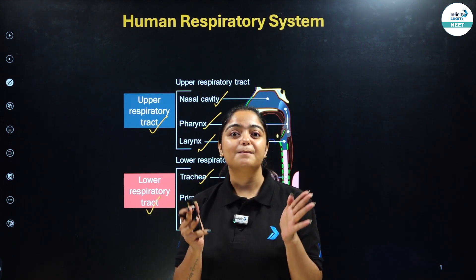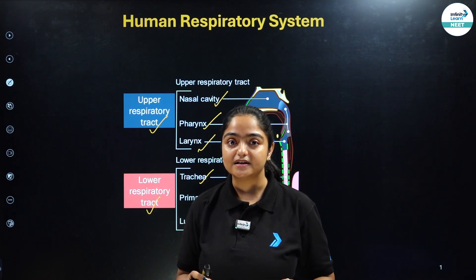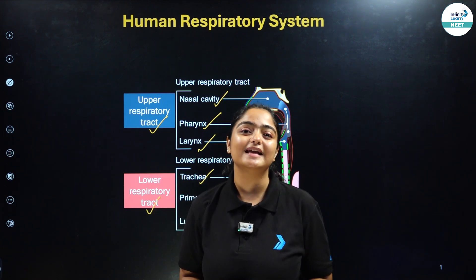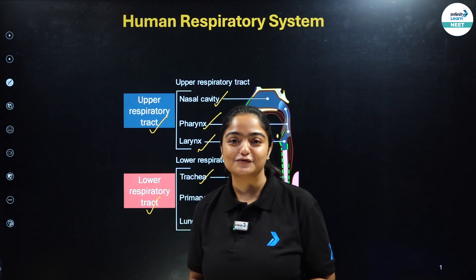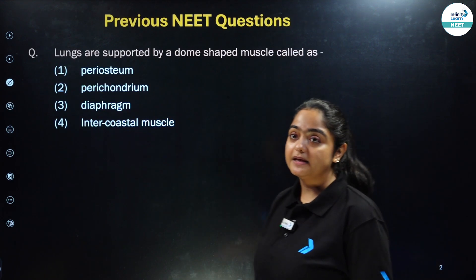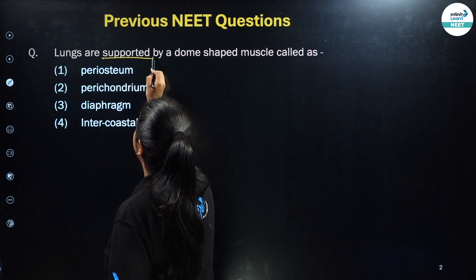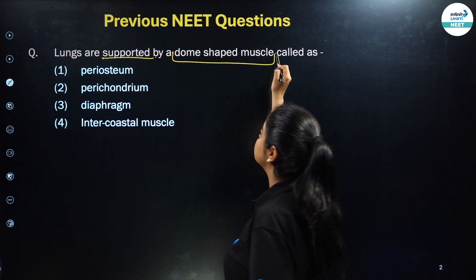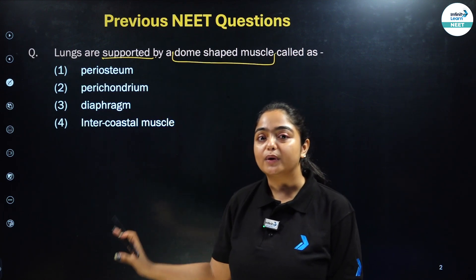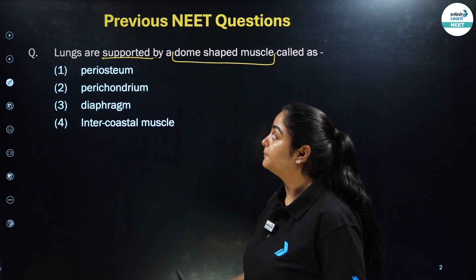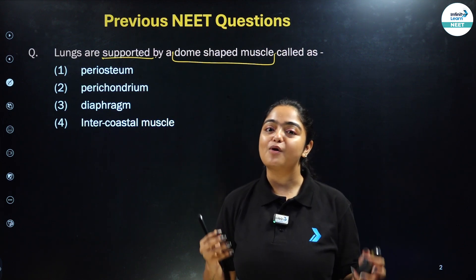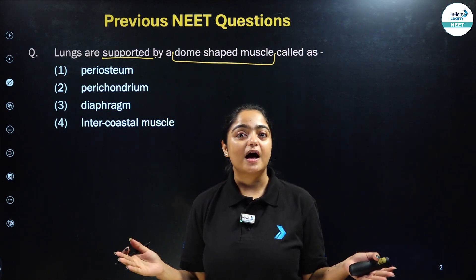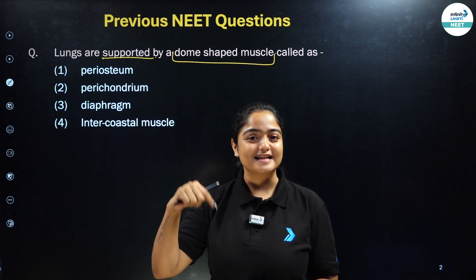So, that was it about this particular topic. Now that you have understood this topic so nicely, I am pretty sure you will be able to answer this question for me. You have to tell me that lungs are supported by a dome-shaped muscle — which among the following is that dome-shaped muscle? Is it periosteum or perichondrium, diaphragm or the intercostal muscle? I will be waiting for your answers in the comment section below.